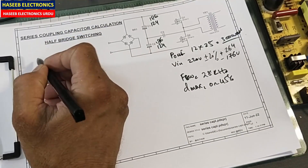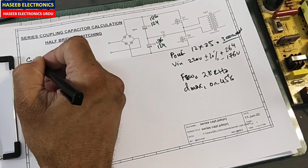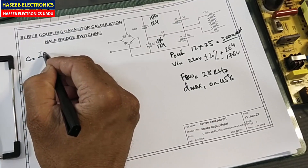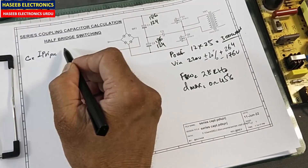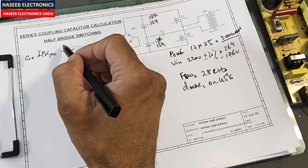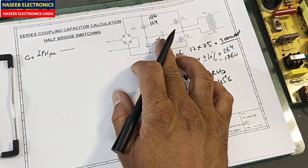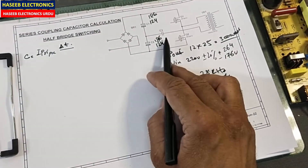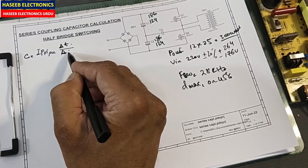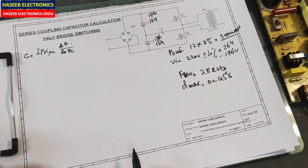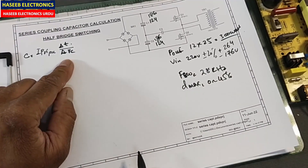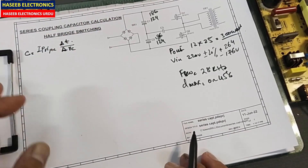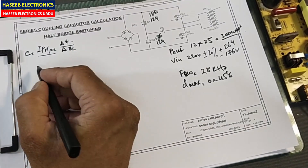To calculate the coupling capacitor we have a simple formula: C-coupling equals I-peak-primary multiplied by delta-t, divided by delta-V-C. Three variables are needed: the peak primary current, the time allowed to charge the capacitor, and the allowed charging voltage delta-V-C. We will calculate each of these three variables.